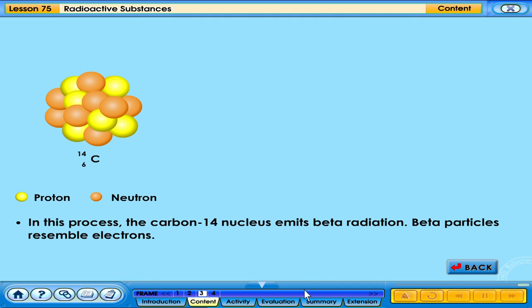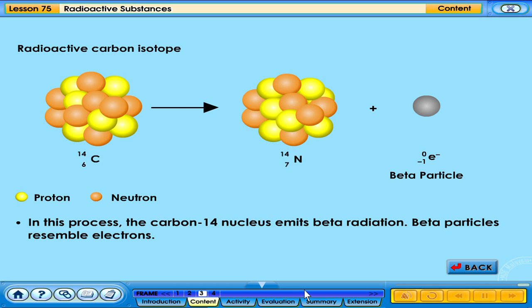In this process, the carbon-14 nucleus emits beta radiation. Beta particles resemble electrons. The new nucleus is formed, which is nitrogen.